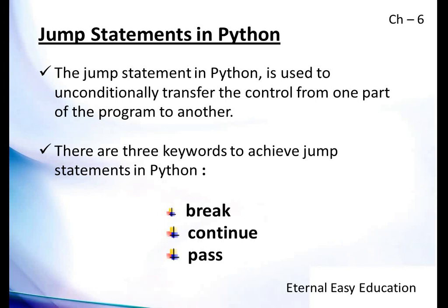As you learned, the looping statements while and for both execute a set of statements multiple times based on a given condition. If the condition is true it will execute and keep on executing until the condition is false. But there may be some situations to control the flow or transfer the flow from one part to another in the looping statement or in the if statement.